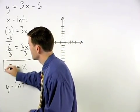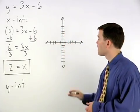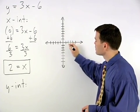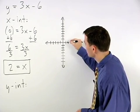So our x-intercept is 2, which means that our line crosses the x-axis 2 units to the right of the origin, or at the point 2, 0.